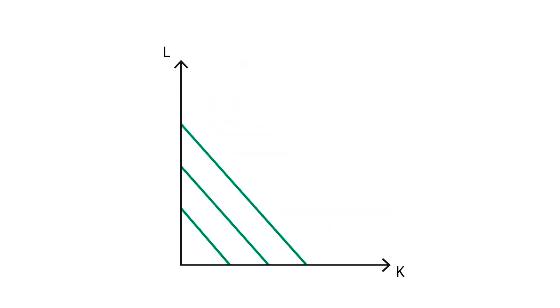Our second set of isoquant curves are graphical representations of factors of production which are perfect substitutes. As we can see, the isoquant lines are parallel 45 degree negatively sloped lines.